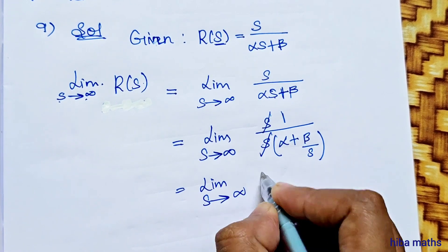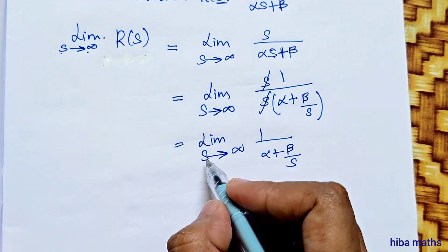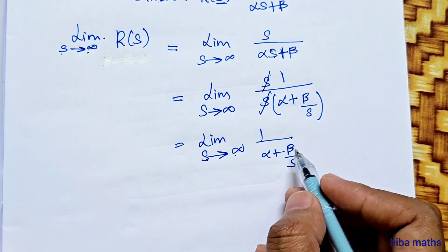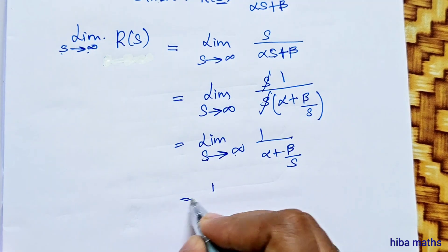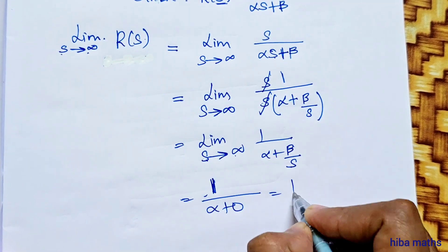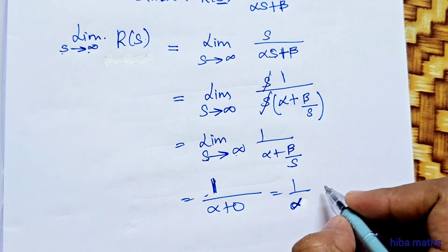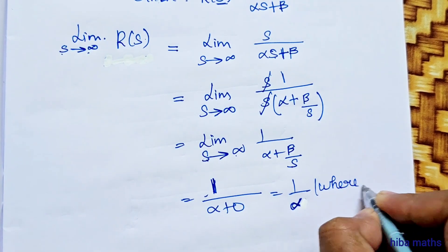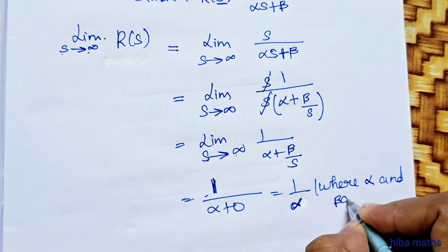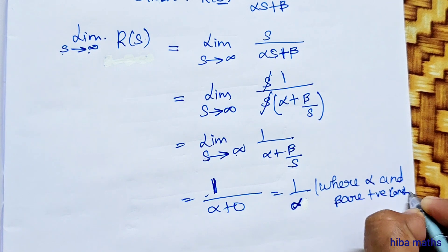Taking the limit as s tends to infinity of 1 divided by (alpha plus beta over s). As s approaches infinity, beta over s approaches 0. So the limit becomes 1 divided by (alpha plus 0), which equals 1 over alpha. Since alpha and beta are positive constants, this confirms the result.